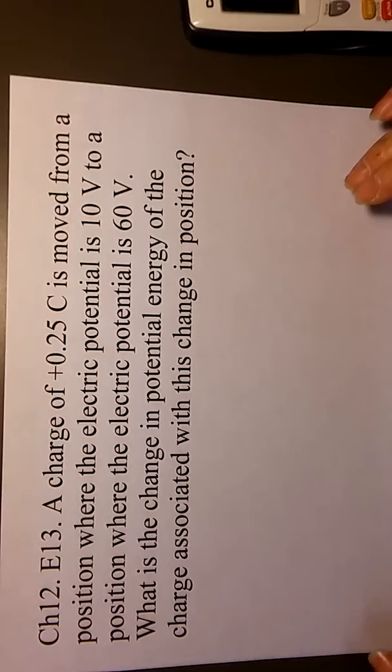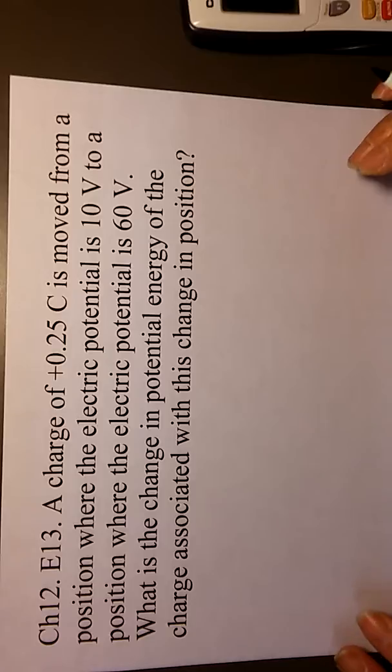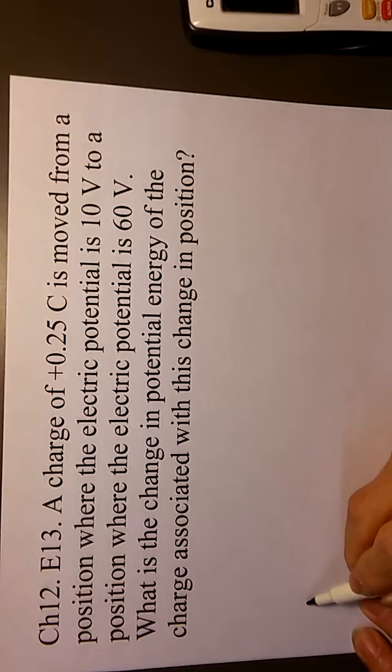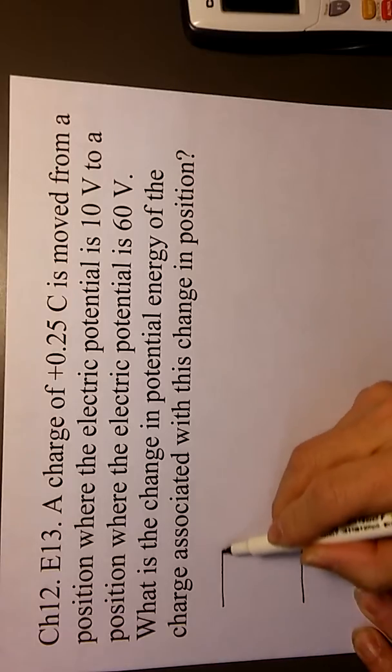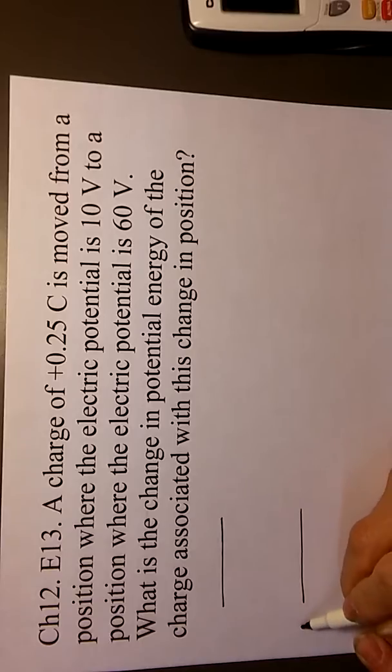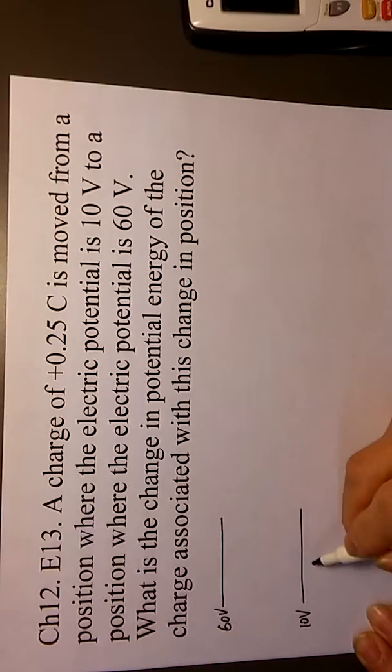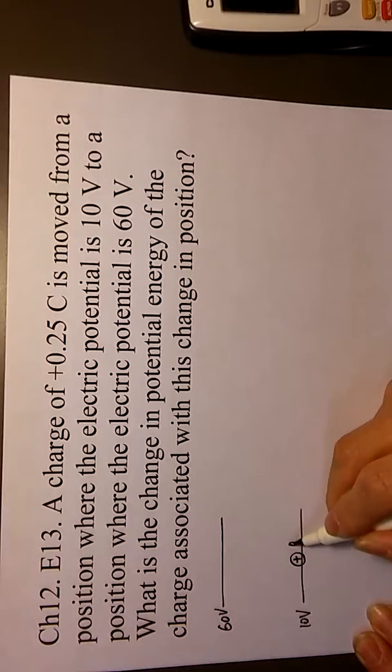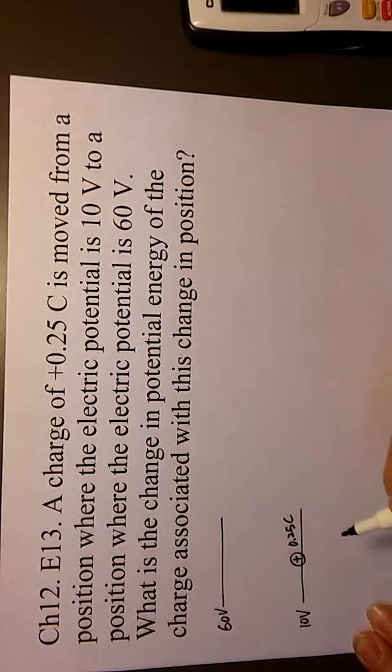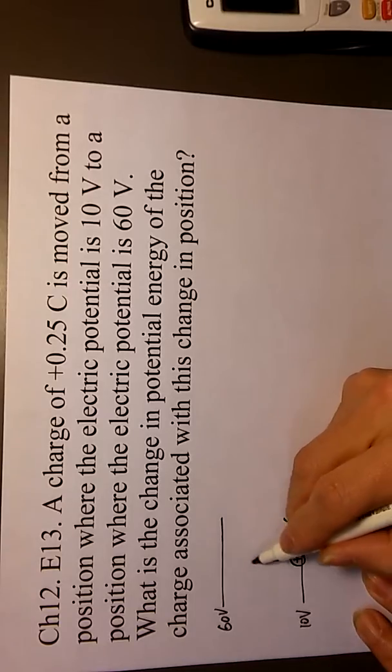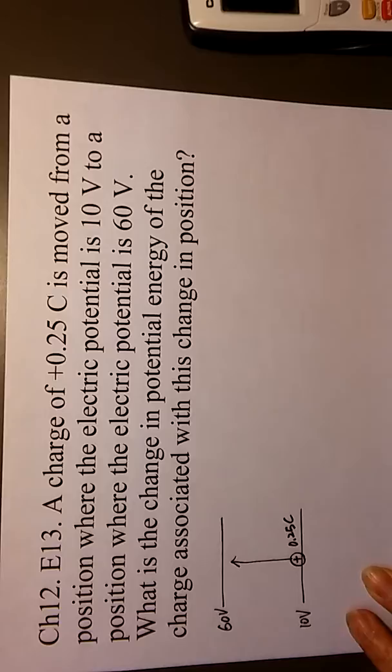What is the change in the potential energy of the charge associated with this change in position? Okay, so one place and the other place we call as 10 volt and 60 volt. And the charge, positive charge of 0.25 coulomb is originally there and then it moves to there and then it will change the potential energy.